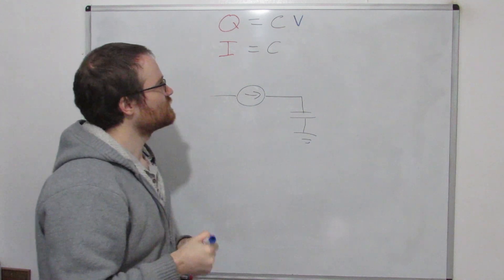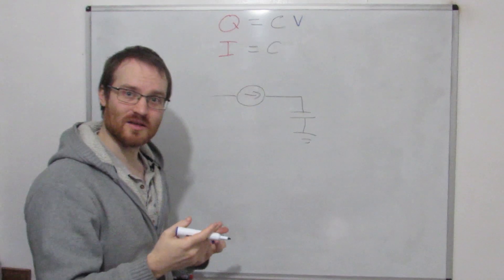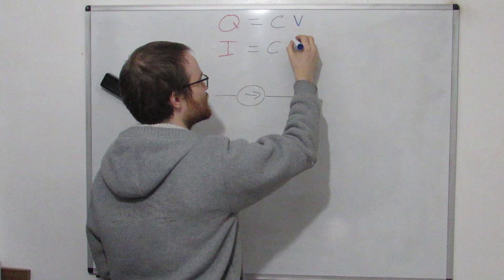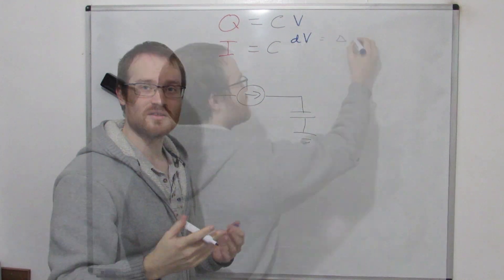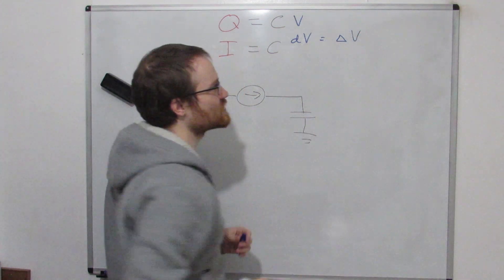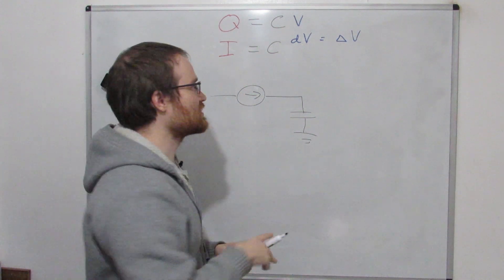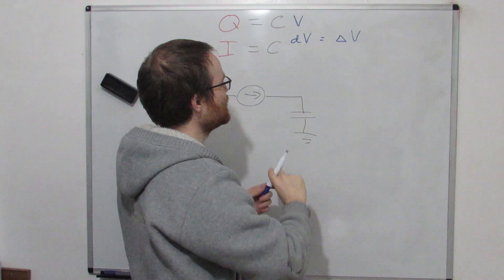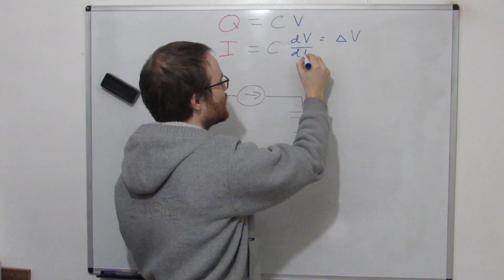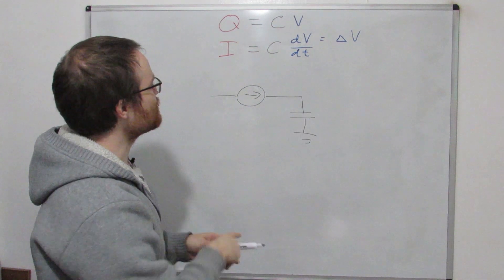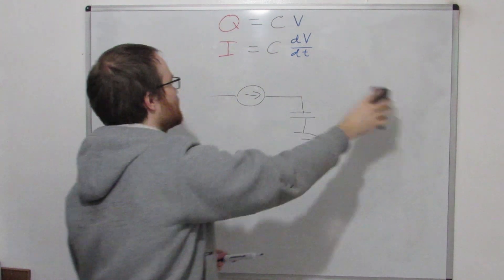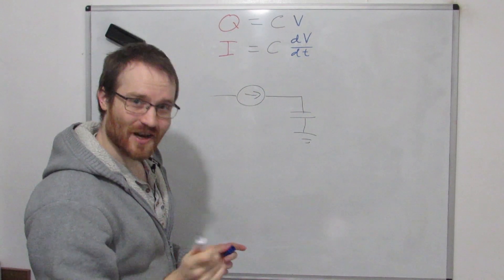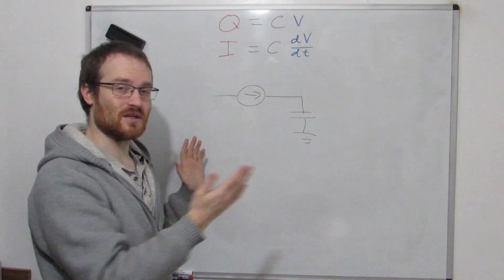There's a little shorthand for when we're talking about how something is changing, and we say it's dV, and the D just stands for delta, which is just commonly used for a small change in V. We're saying for a small change in V over a small change in time, that is equal to the current. Without going into the maths of it, because I promised you I wouldn't, and I'm not going to, you can look at this two ways.